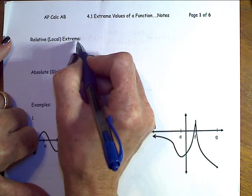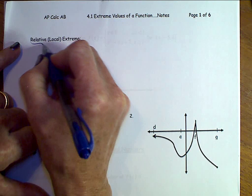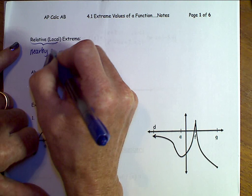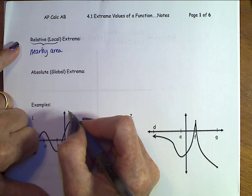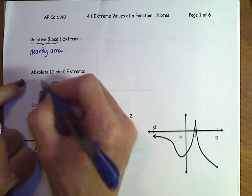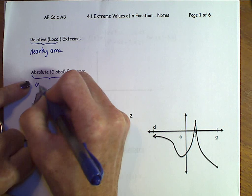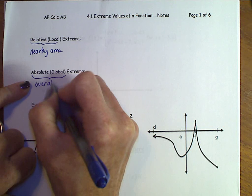The absolute or global means overall. Extrema then refers to maxima and minima.